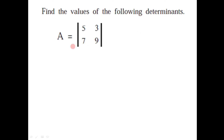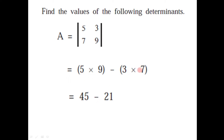Now let us illustrate this by one example. The question is: find the value of the given determinant. The determinant A is equal to [5, 3; 7, 9]. As we just studied, firstly we take the product of 5 and 9, minus the second product 7 into 3. So we have 5 into 9 minus 3 into 7, that's 45 minus 21, which gives us 24. So 24 is the value of this given determinant.